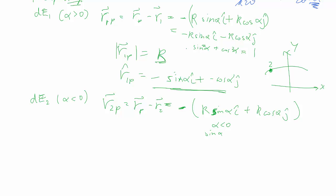But don't forget that alpha here is less than 0. So if alpha is less than 0, sine alpha is also less than 0. So the negative sine is actually hidden in that part. Whereas the cosine, even though the alpha is less than 0,